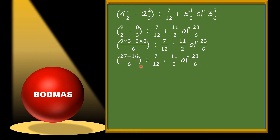Now this bracket still needs to be solved. We will do subtraction of the numerators: 27 minus 16 = 11, giving us 11/6. So we have 11/6 divided by 7/12, plus 11/2 of 23/6.